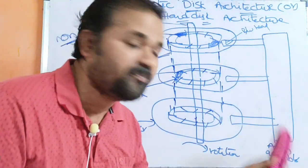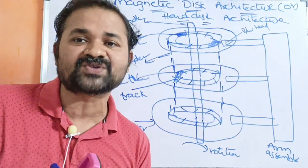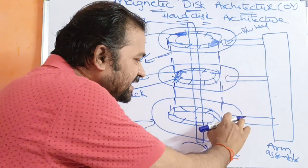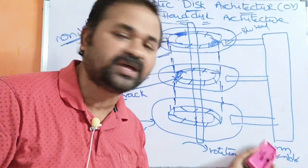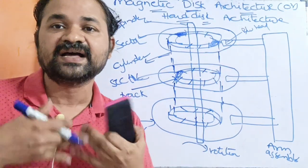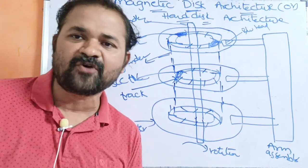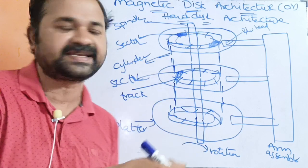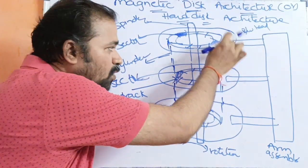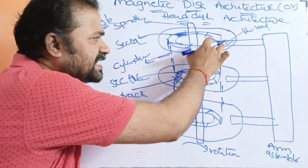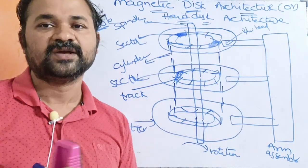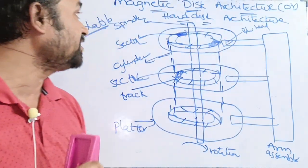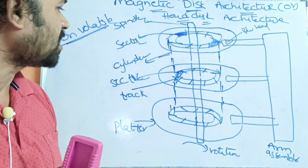Next we have the arm assembly and the read-write head. On each surface of each platter, we will have a read-write head. The read-write head is attached to the disk arm assembly. The read-write head allows us to perform read operations as well as write operations on the corresponding sector. The data resides in the sector, so the read-write head can read the data in the sector or write some data into the sector. If we move the disk arm, then automatically the read-write head will be moved.